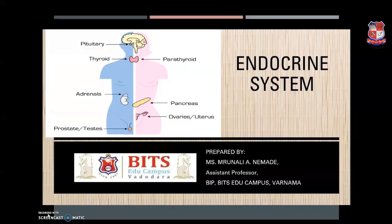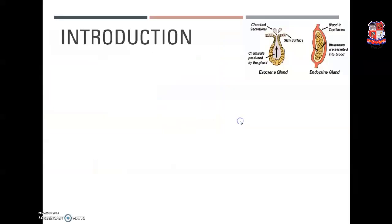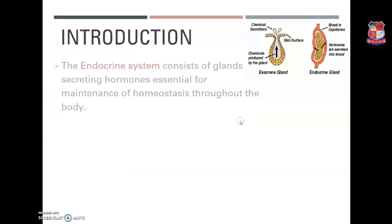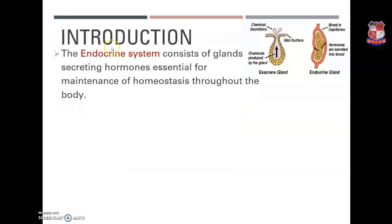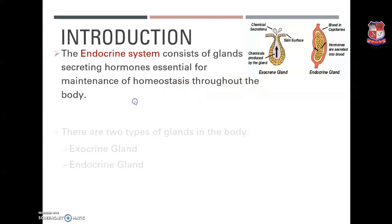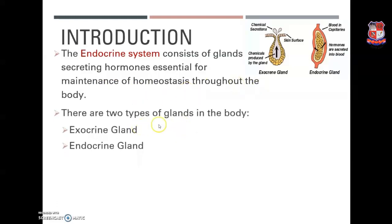Hello everyone. We'll start with the topic: the endocrine system — introduction. The endocrine system generally consists of glands which secrete hormones that are essential for the maintenance of homeostasis throughout the body. Basically, there are two types of glands in our body: exocrine glands and endocrine glands.